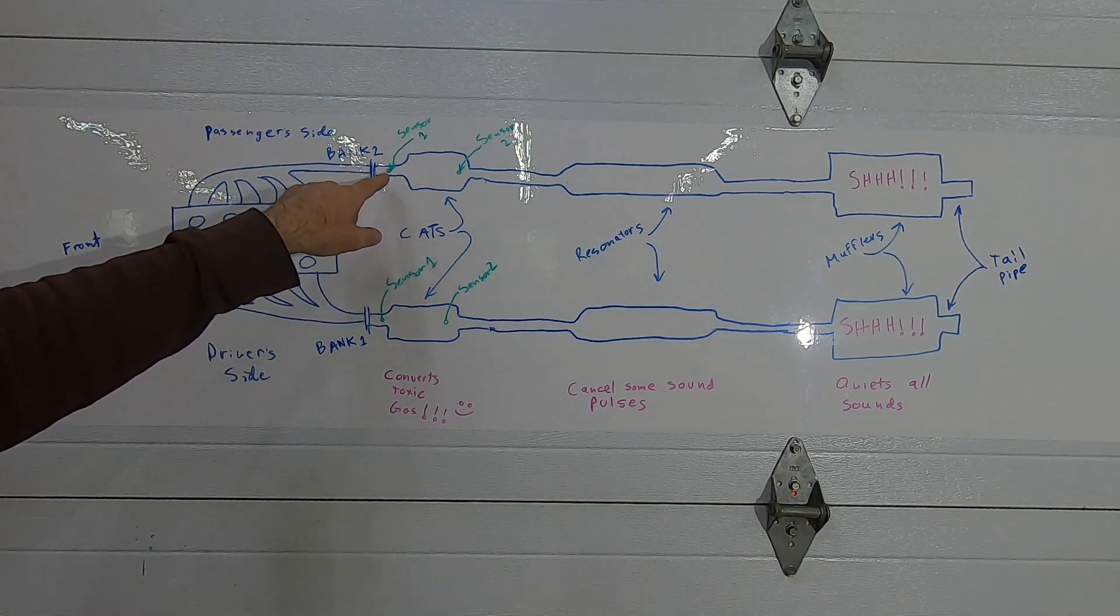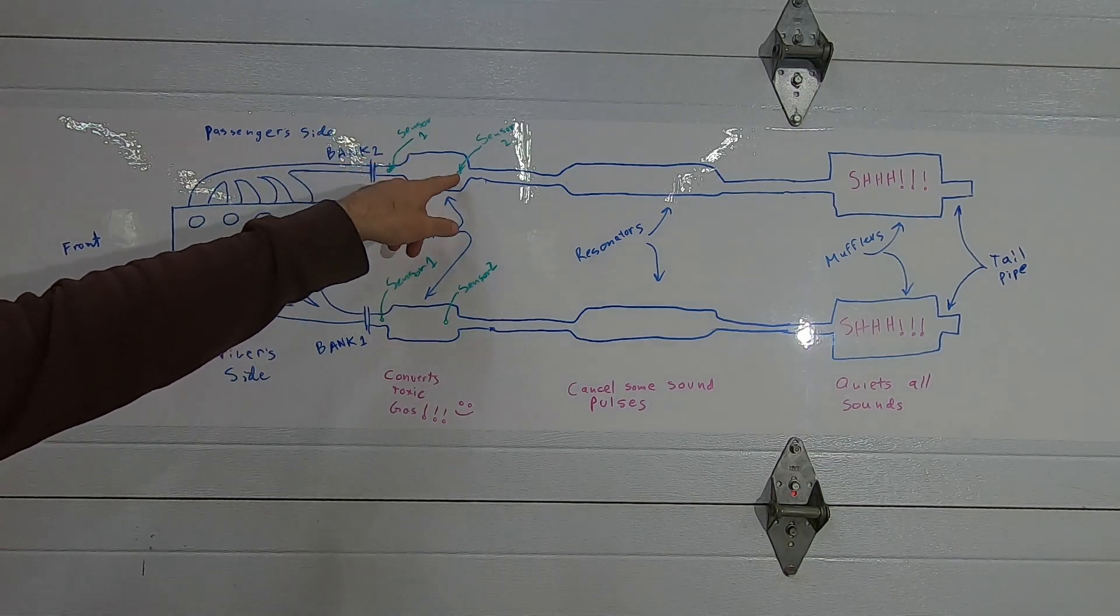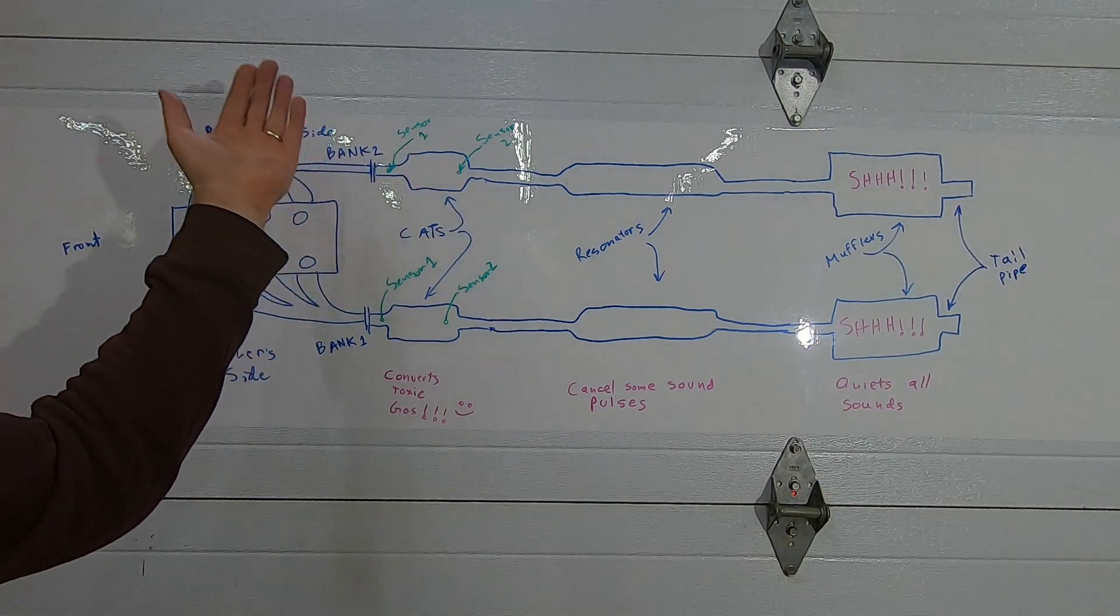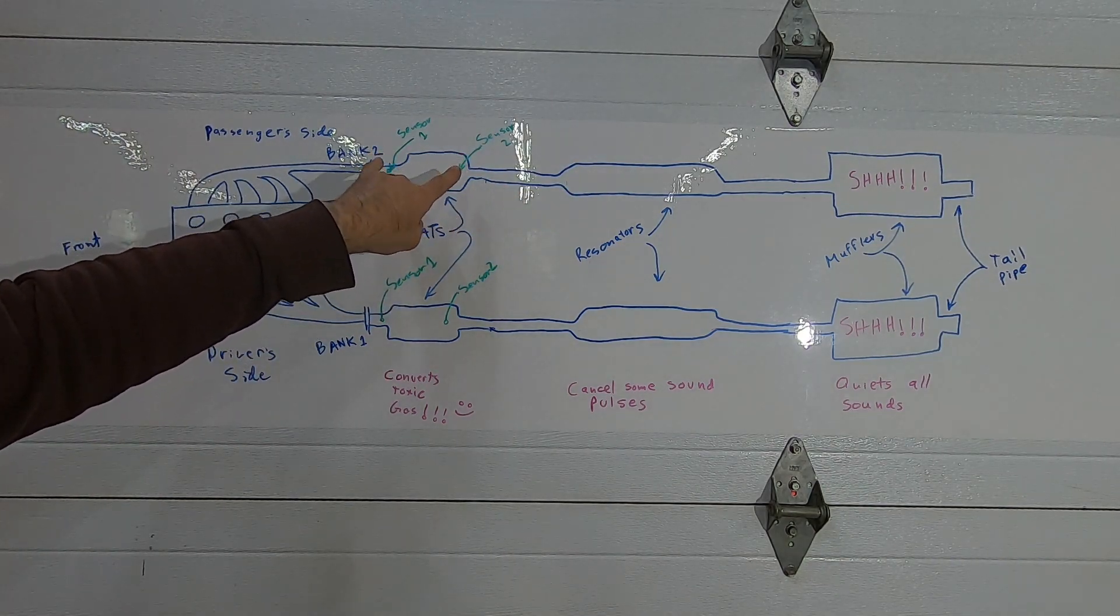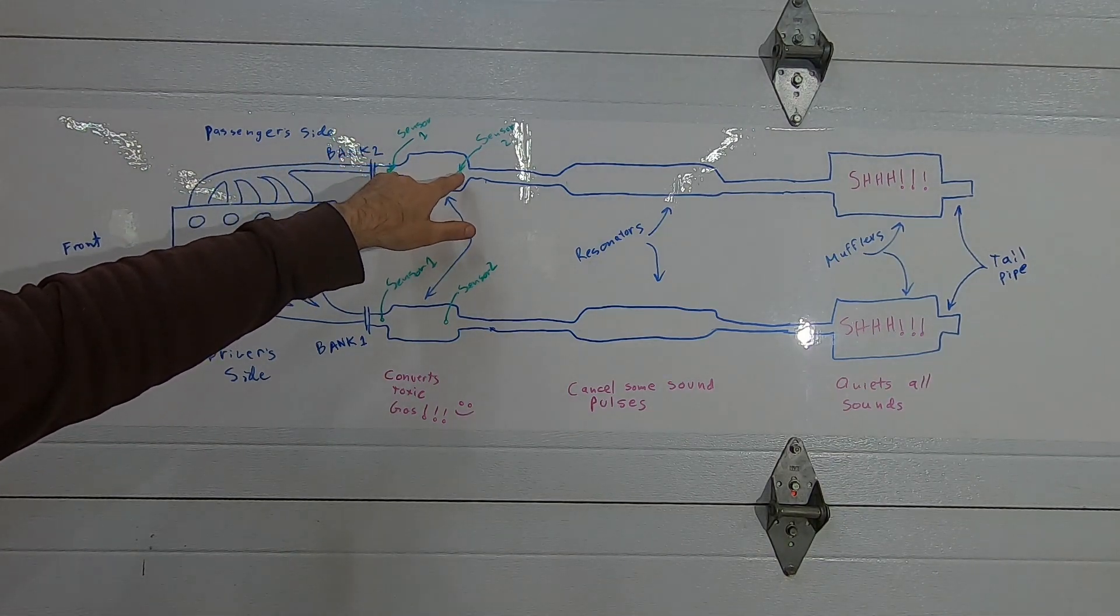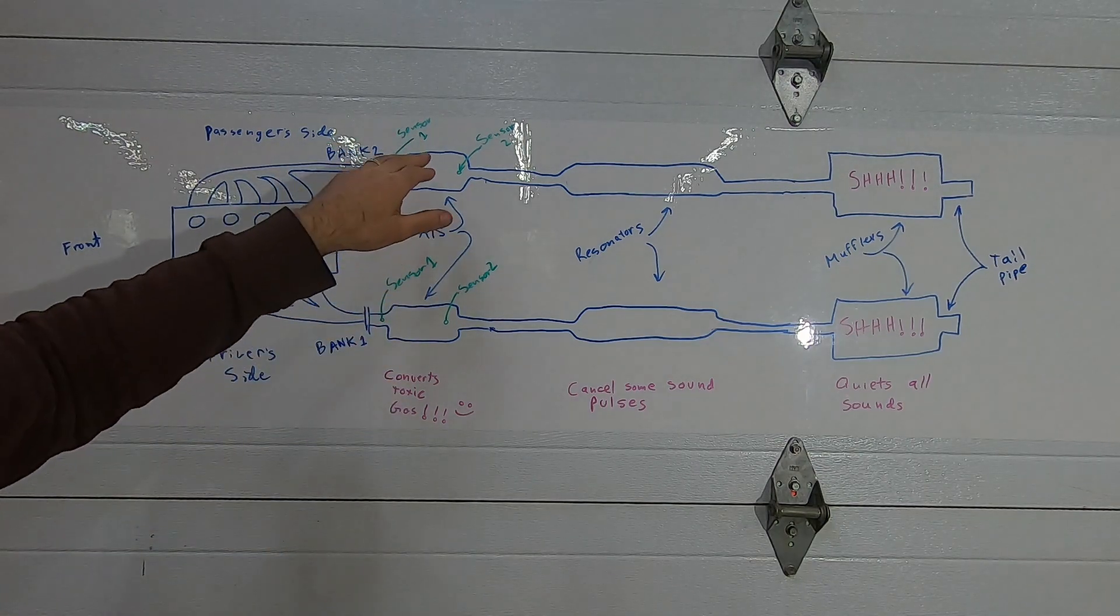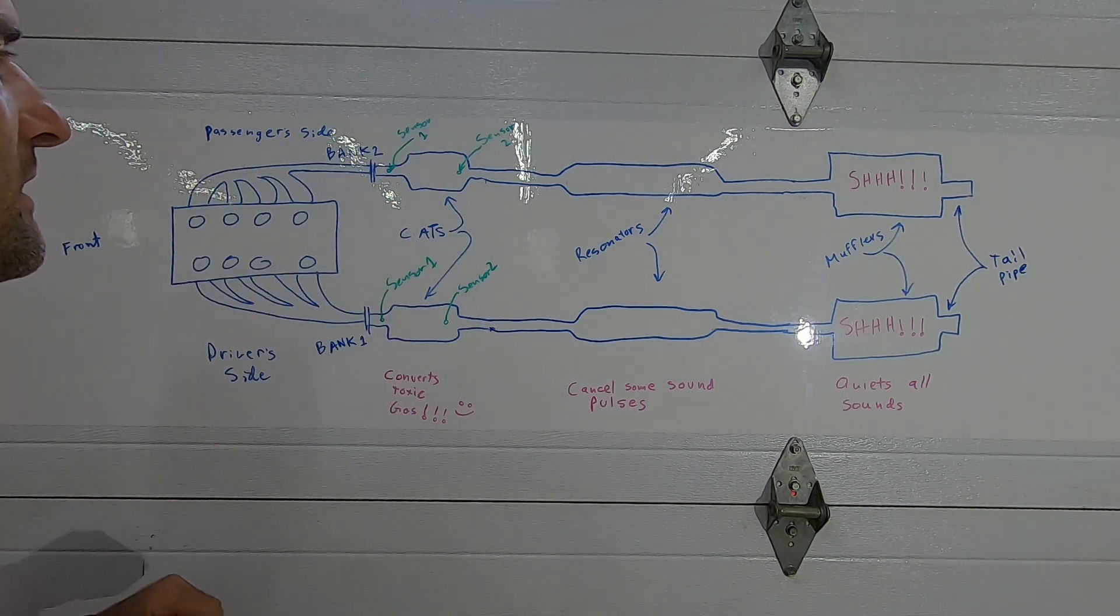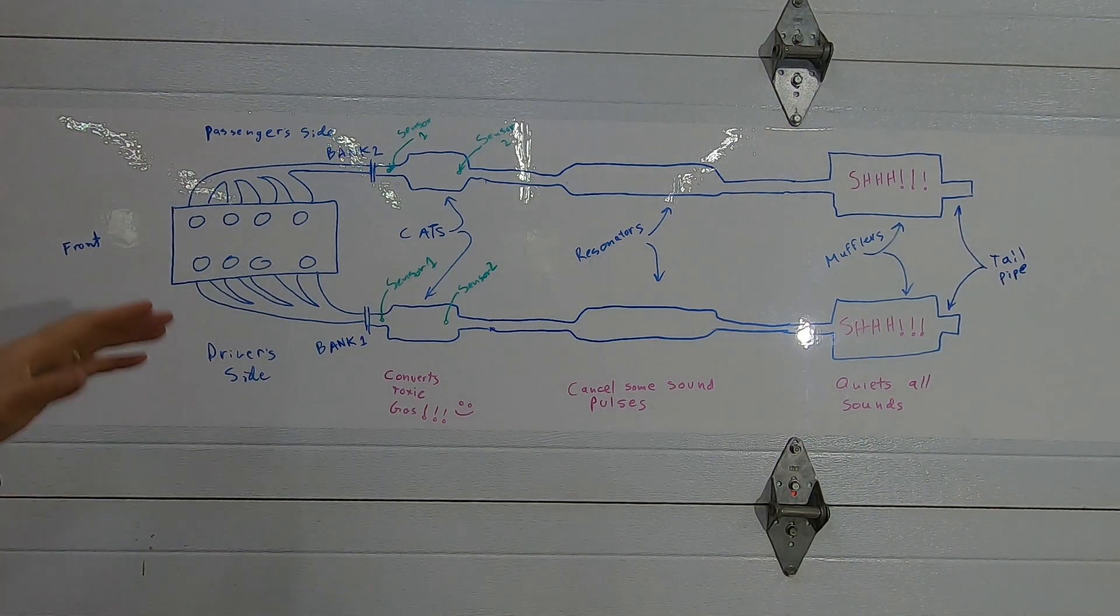Now that we know what all the major components are, let's talk about the exhaust gases and the information we're going to need to troubleshoot them. We have sensor one which is in front of the catalytic converter and sensor two which is either in or behind the catalytic converter. These two sensors will detect the difference in the oxygen content of the exhaust gases flowing here and here, and the difference between those readings indicate how well the catalytic converter is functioning.